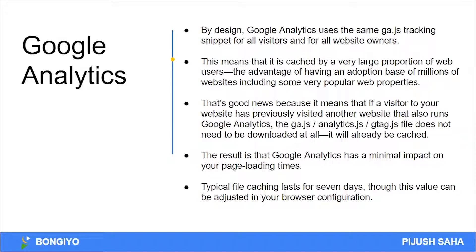The header section has a type of tracking code — Google Analytics, BigQuery code, or conversion tracking, or Tag Manager. Google Analytics will confirm if there are any issues. There will be different cases. Typically, file caching lasts for 7 days, though this value can be adjusted in your browser configuration.